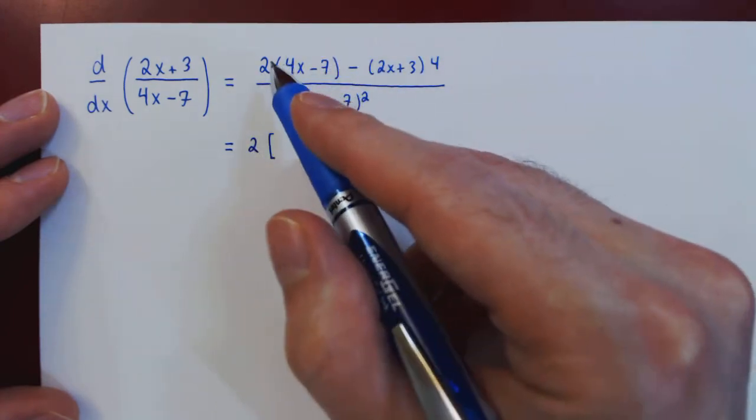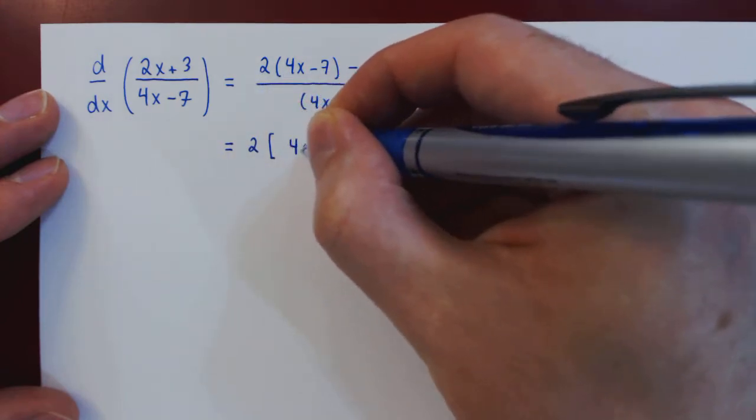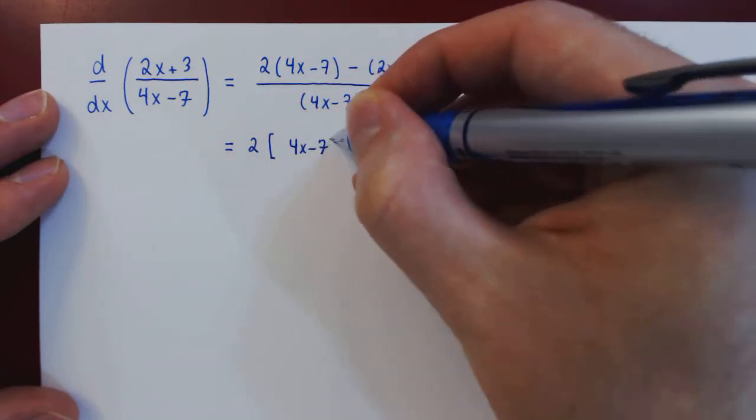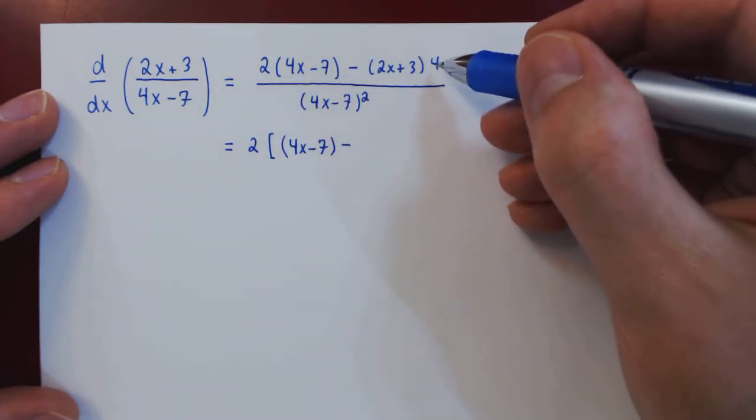So once we factor 2 out in the first term, we're left with 4x minus 7. Then minus...